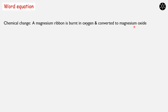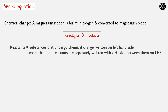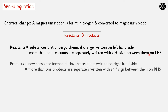Under word equation, a chemical change can be generally represented as: reactants → products. Reactants means substances that undergo chemical change and they are always written on the left hand side (LHS). If we have more than one reactant, they are separately written with a positive sign between them. Products means new substances formed during the chemical reaction and they are always written on the right hand side (RHS). If we have more than one product, they are also separated by a positive sign.